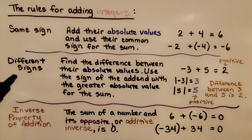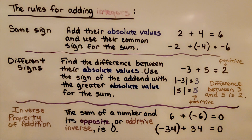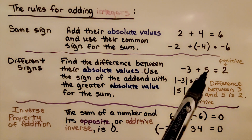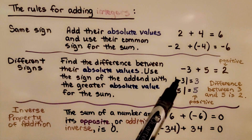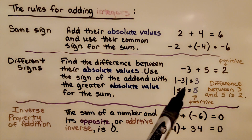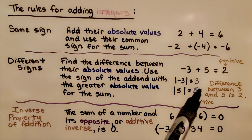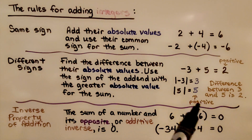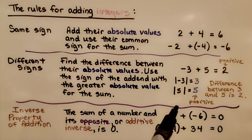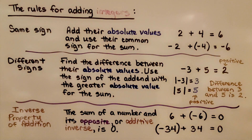When we have different signs, we find the difference between their absolute values, then use the sign of the addend with the greater absolute value for the sum. We have a negative three plus a positive five — they have different signs. The absolute value of negative three is three, and the absolute value of positive five is five. The difference between three and five is two. Positive five has the greater absolute value — it's positive — so our sum will be positive.